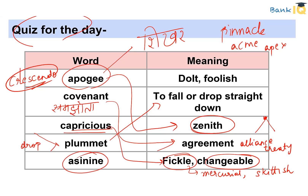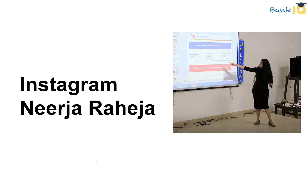The word 'Asinine' refers to an extremely stupid or foolish person — a 'moorkhvyakti' or 'bhundu.' We use the word asinine for someone who is extremely stupid, similar to imbecile. That was the quiz of the day. If you have any doubts about today's 10 important common errors or the quiz, you can reach out on Instagram or write your doubts in the comments section.